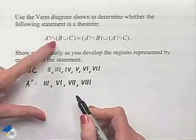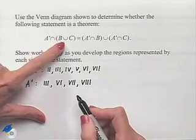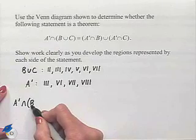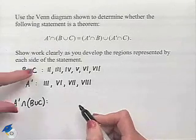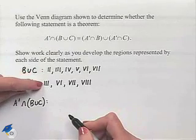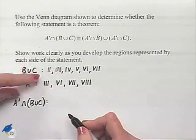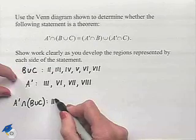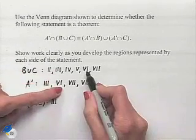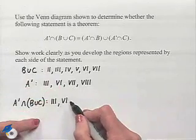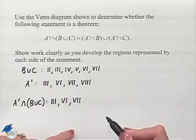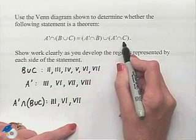We're now looking for the intersection of those regions, so A complement intersected with B union C will give us the regions that appear in both. We have region 3 in both, region 6 in both, and region 7 in both. That gives us regions 3, 6, and 7 for the left-hand side. Now let's turn our attention to the right-hand side of this equation.